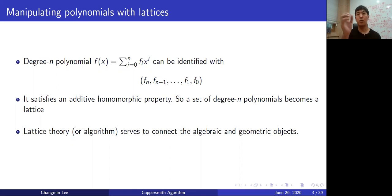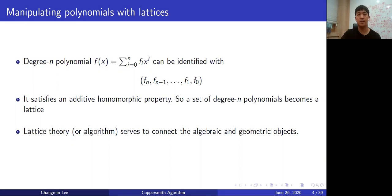If you put the polynomials into a lattice, suddenly there is a geometric structure, and now we can try to exploit that somehow to find our solution. But you have to keep in mind that a geometric structure does not guarantee to find all solutions. It is only sure that a small solution can be recovered with a lattice reduction algorithm. In this talk, I will state a lattice reduction algorithm, but I use it as a black box.